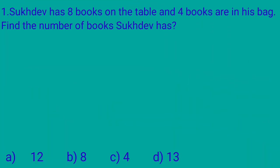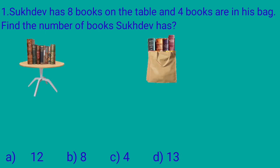Sukhdev has 8 books on the table and 4 books are in his bag. Find the number of books Sukhdev has. Sukhdev has 8 books on the table and 4 books in his bag. So we will count 4 more than 8. Start counting from 8. Here we have 8 and after 8 we will have 4 blanks.